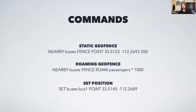Now I'll show you some of the Tile38 commands for creating simple geofences and setting an object's position. The first command creates a static 200-meter geofence around a specific point that triggers a notification when an object from the bus's collection interacts with it. The next command creates a roaming geofence that triggers notifications when two objects are within one kilometer of each other. Finally, we have a very simple SET command which inserts or updates a point, and if that point interacts with the defined geofence, Tile38 will broadcast a notification. These are what real Tile38 commands look like — they have a very simple, easy-to-understand structure.